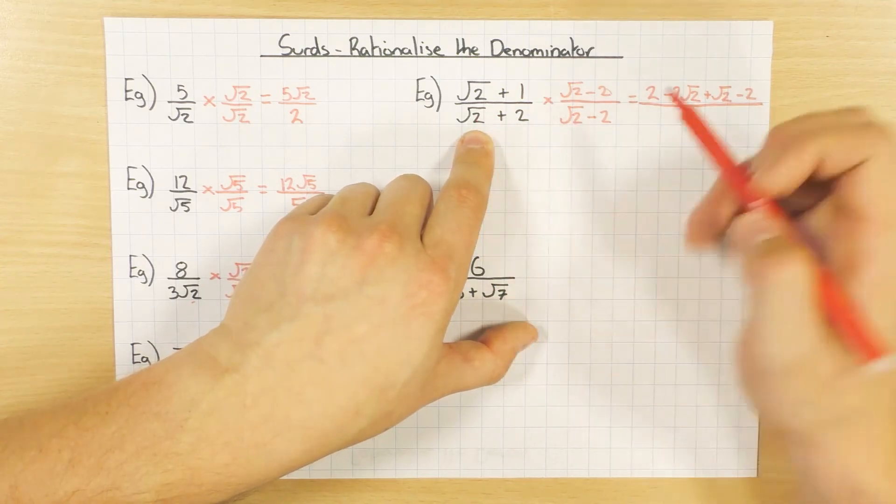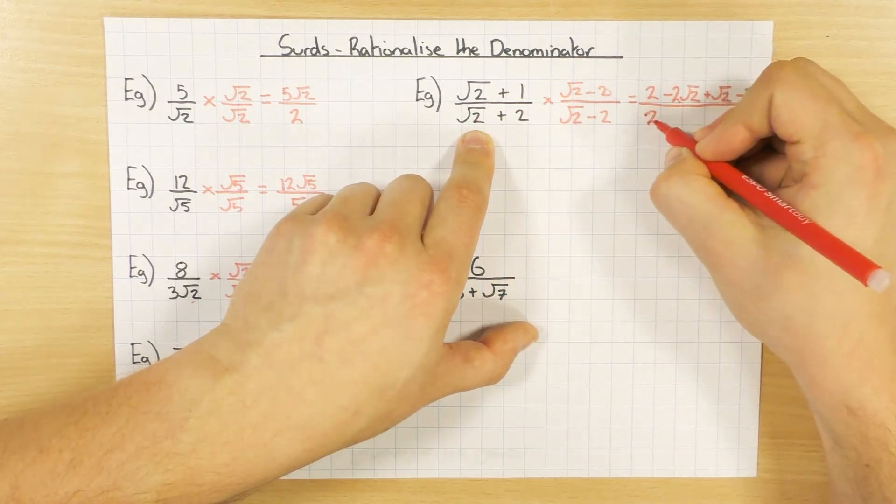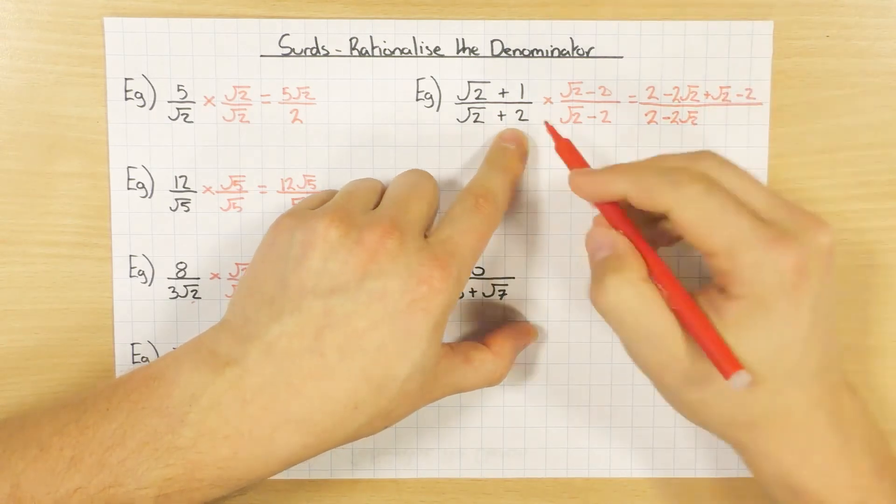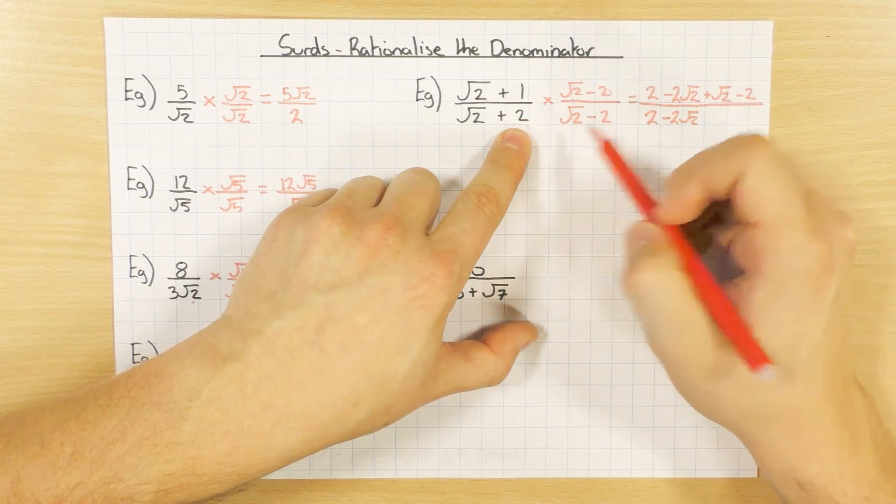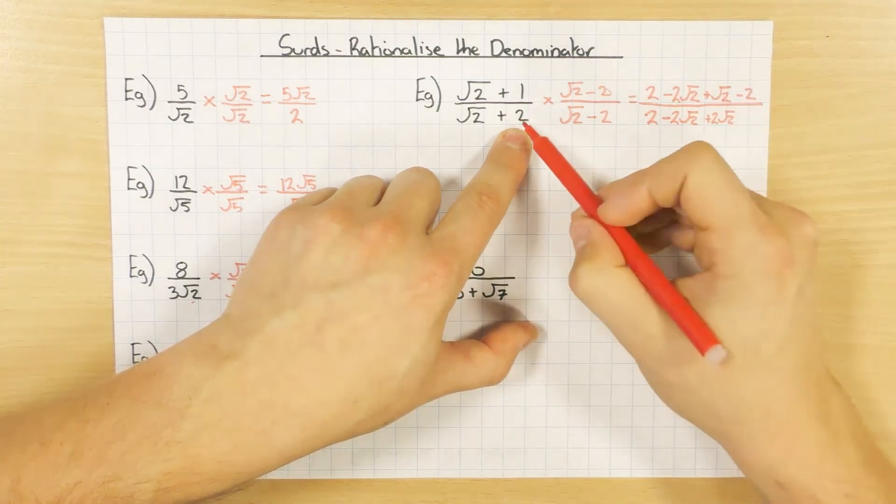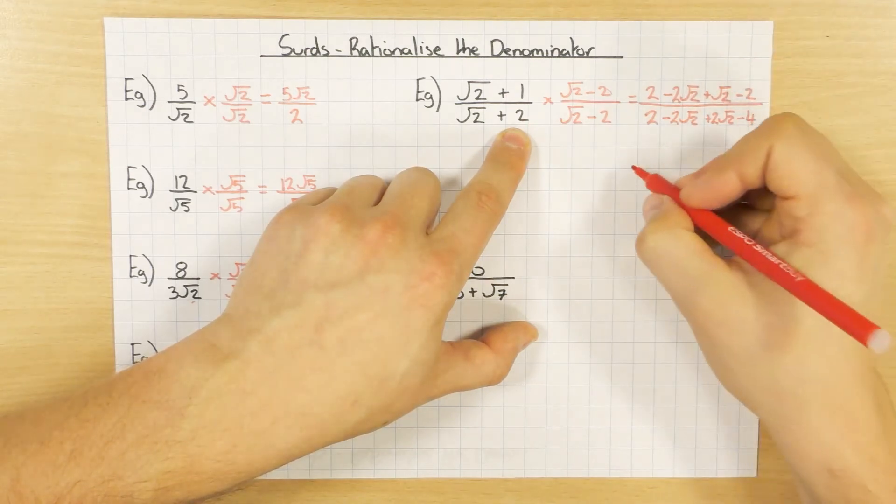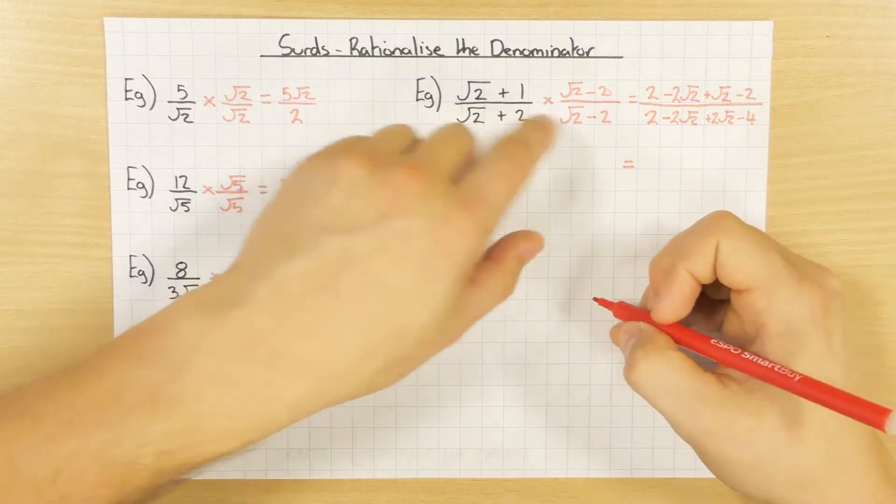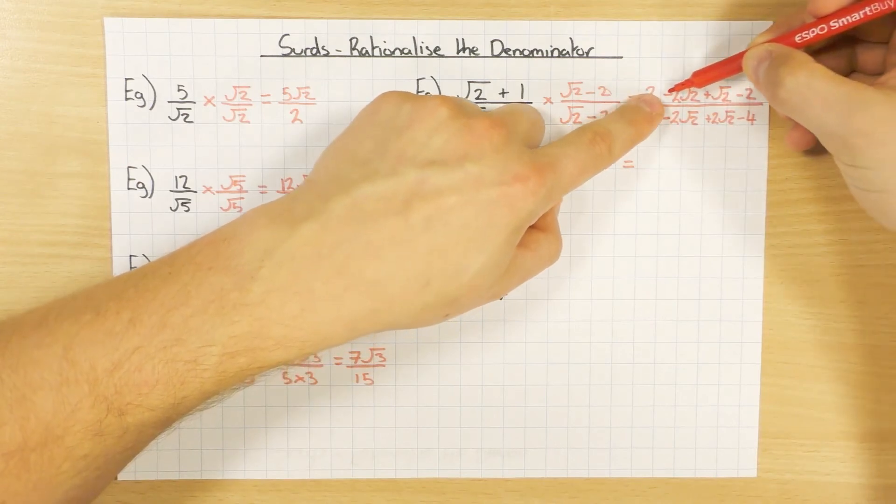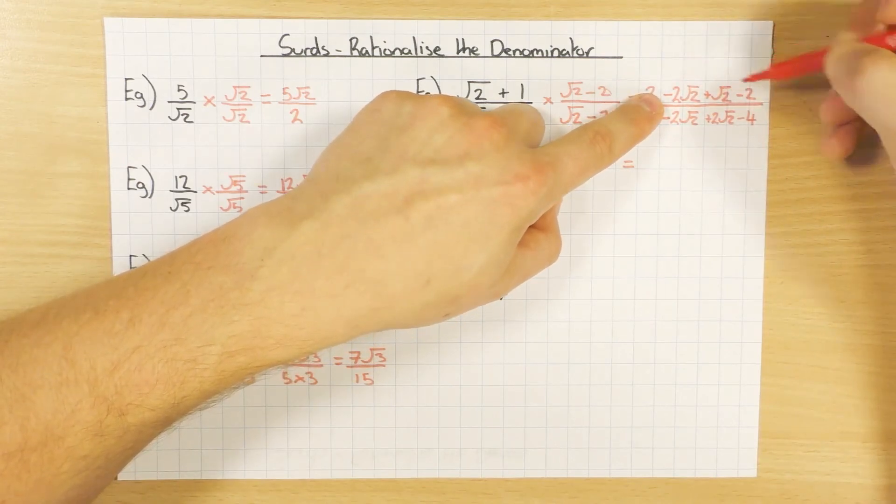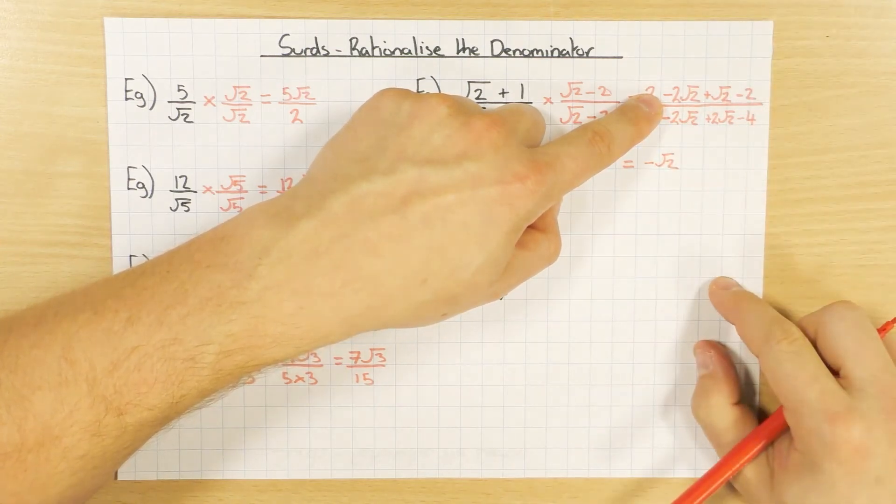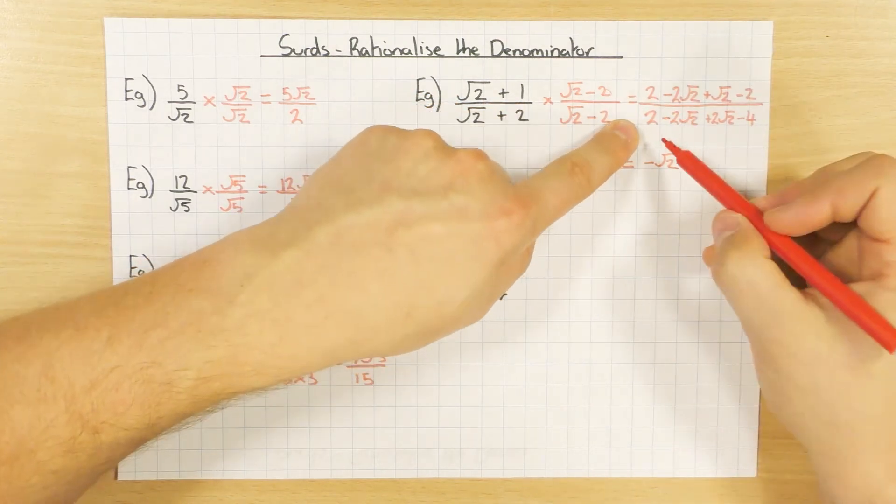On the bottom, root 2 times root 2 is 2. Root 2 times minus 2 is minus 2 root 2. Then over here, plus 2 times root 2 would be plus 2 root 2. And 2 times minus 2 would be minus 4. So when we simplify that, on the top, 2 minus 2 is nothing. Minus 2 root 2 plus root 2 would just be minus root 2.